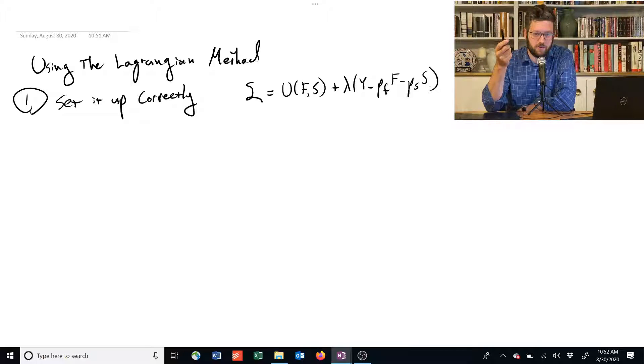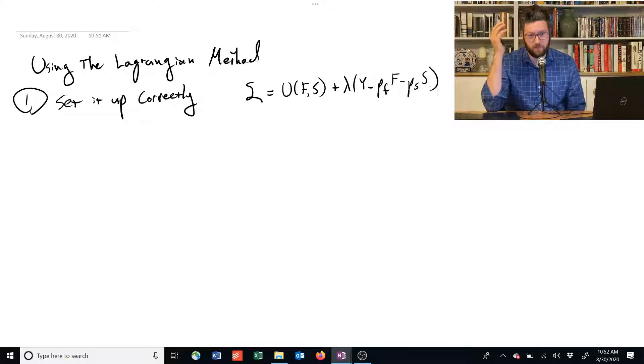All right, we have the objective function first, our utility, we've got our constraint, and we're multiplying by this new creature called the Lagrange multiplier, which we'll try to get some intuition for what it's doing later.